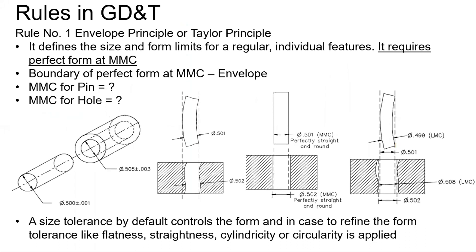Rule number one: if a feature is at Maximum Material Condition, the feature should be perfect — it should not have any waviness or bend. This is called the envelope principle or the Taylor principle. For example, a shaft with diameter 5 ± 0.01 has an MMC of 0.501 and LMC of 0.499. The hole has a maximum diameter of 0.508. If the shaft is at MMC and is also bent, the virtual condition diameter will exceed the hole size.